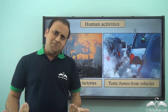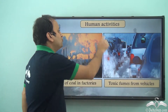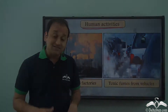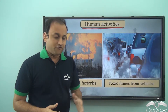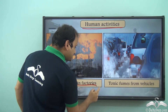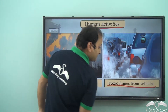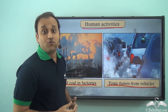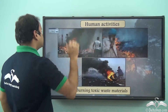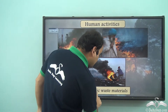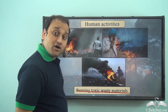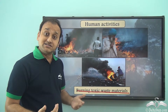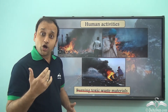The main reason for global warming is human activities. Many different activities performed by humans result in global warming. For example, burning of coal in factories and toxic fumes from vehicles add harmful gases into the air, which result in global warming. Apart from that, burning toxic waste materials also adds harmful gases into the atmosphere, resulting in an increase in the temperature of the Earth.